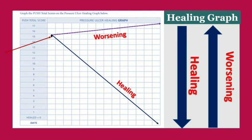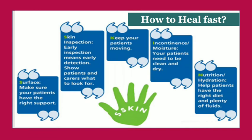To heal pressure ulcers quickly, follow these five steps. Surface: ensure patients have the right support surface. Skin inspection: early inspection means early detection — show patients and carers what to look for, especially at pressure points. Keep patients moving: ambulate frequently or change position to avoid pressure. Incontinence or moisture: keep patients clean and dry. Nutrition and hydration: help patients have the right diet and plenty of fluids.